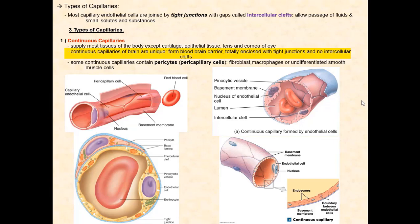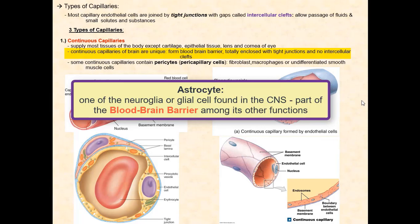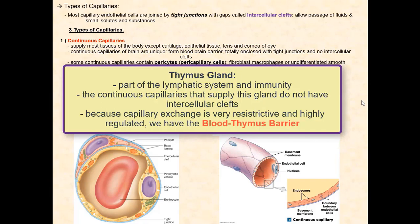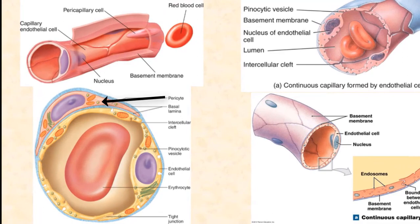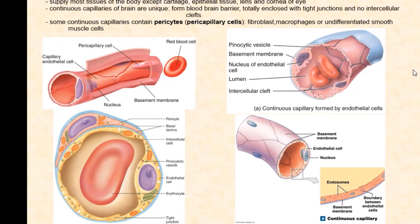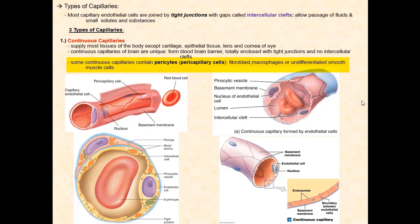Furthermore, astrocytes cling to these continuous capillaries, forming the blood-brain barrier. This restricts the substances and solutes the neurons are exposed to. The thymus gland is another tissue that does not have intercellular clefts, forming what is referred to as the blood-thymus barrier. The thymus gland is part of the lymphatic system and immunity. Some continuous capillaries have cells called pericytes, or pericapillary cells, which could be fibroblast, macrophage, or undifferentiated smooth muscle. Their functions aren't entirely clear, but they may be involved in regulating blood flow through the capillary and may play a role in the repair and growth of the vessel.